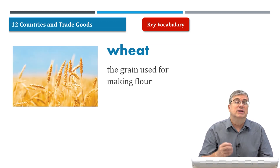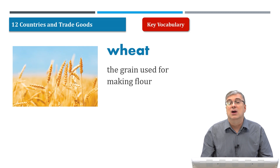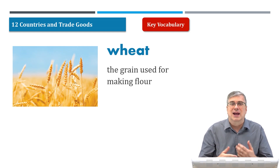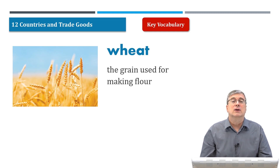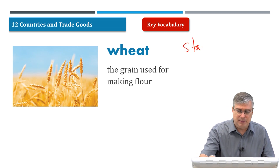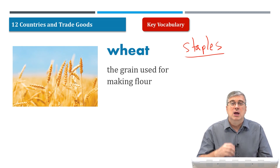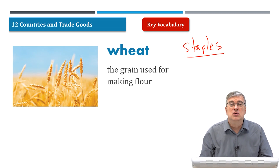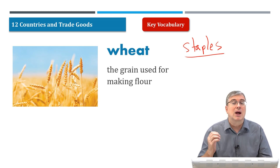Next, we have wheat. Wheat is a grain grown in many countries and used for making flour. If you like pancakes, you are eating wheat that has been ground into a white powder called flour — sometimes white, sometimes brown, depending on how they make it. Wheat is grown in the fields, very similar to rice. Wheat, rice, and corn are called staples because they are the basic food for many people around the world. They form the basis of the diet for people around the world.